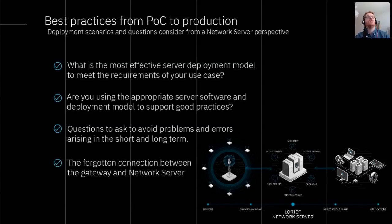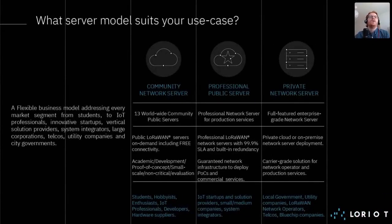Following that, we'll quickly delve into the sometimes forgotten connection between the gateway and the network server, and how picking the right software can help ensure you follow good practices. There are a number of solutions available in the market, from gateway-embedded systems to cloud and on-premise network servers, typically operating as public or private networks. We highly recommend the use of a centralized network server, and there are several deployment models and commercial offerings which can support your requirements: community servers, professionally managed public servers, and private network servers.